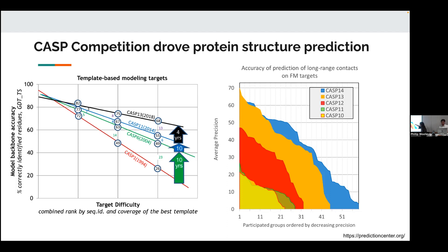This graph is showing target difficulty on the X axis and then model backbone accuracy. So for really easy targets, even the very first models in 1994 were doing really well. But as you increase the target difficulty, we were really making not great progress and still had quite a ways to go. Like you were only maybe a little bit over 60% accurate in the recent years. So there was still a lot of room to grow.